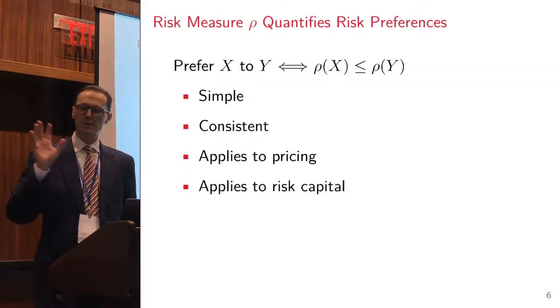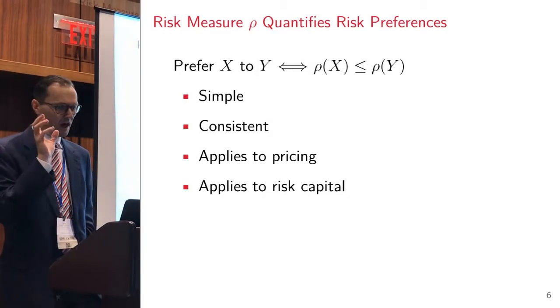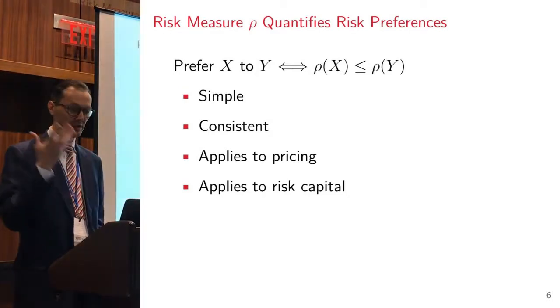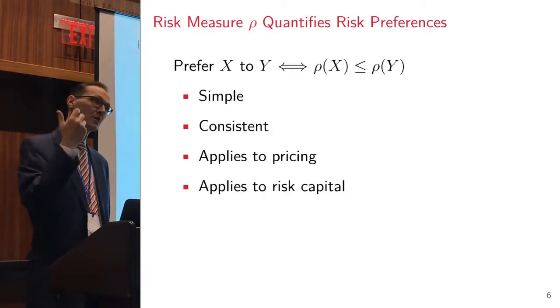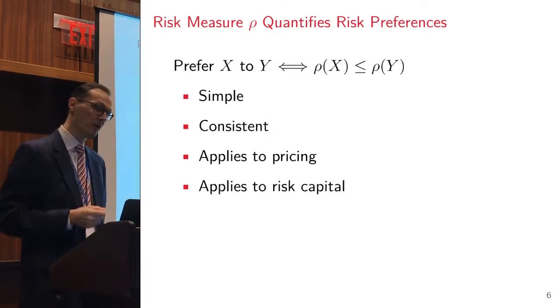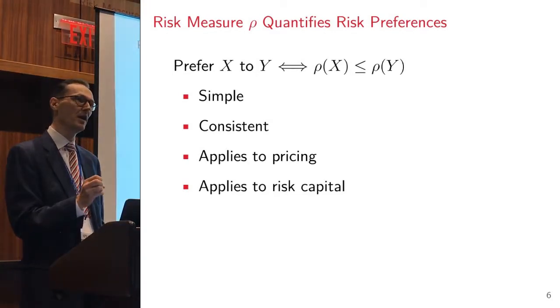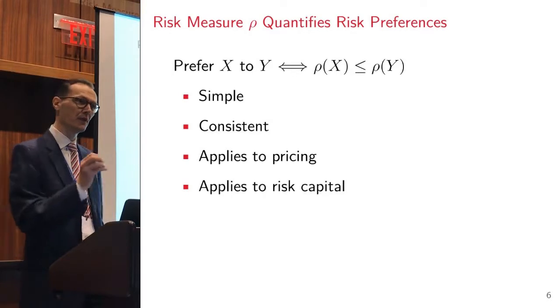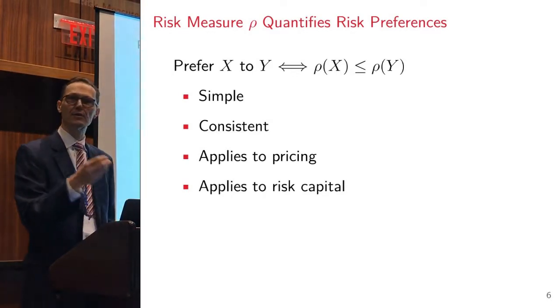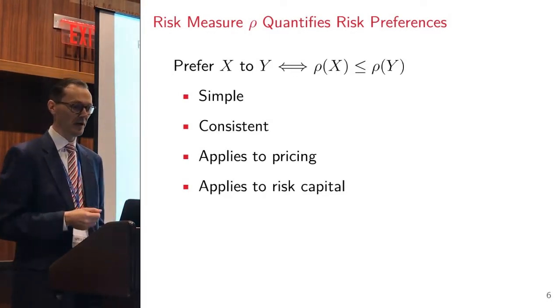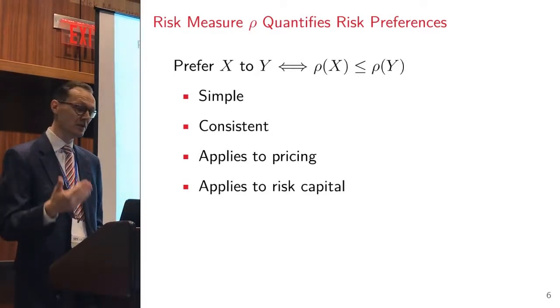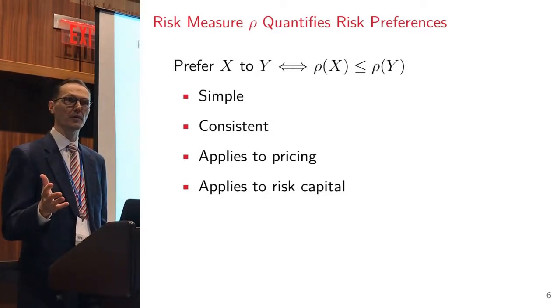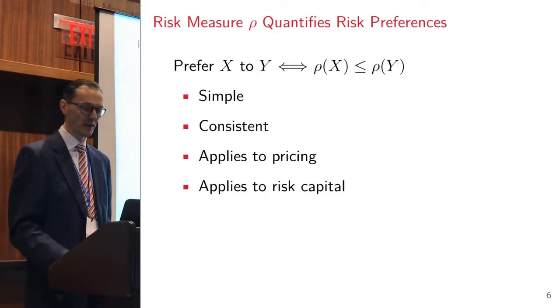A risk measure quantifies our risk preferences in some way. It's some function which is going to take some random outcome, which we're thinking of as a random variable X, and it's going to boil it down to a number. I'm very simply going to say I prefer X to Y if the risk measure is less than the risk of Y. It's simple, it's consistent, it's easy to apply for pricing, capital, or whatever I want to do.